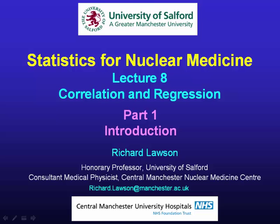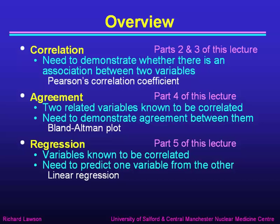This is lecture 8 in my series on statistics for nuclear medicine, and I'm going to be talking about correlation and regression. In parts 2 and 3 of this lecture, I'll talk about correlation. That's used when we need to demonstrate whether there's an association between two variables, and I'll introduce the measure of Pearson's correlation coefficient for that purpose.